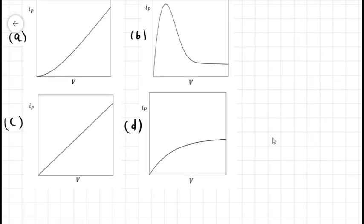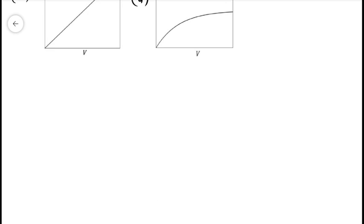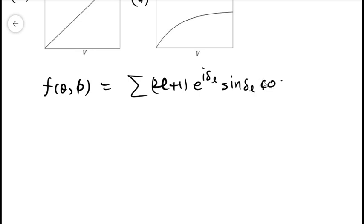So we can apply the scattering theory here. We know from the scattering theory the scattering amplitude is given by f(θ,φ) equals summation from l=0 to infinity of (2l+1) times e^(i*δ_l) times sin(δ_l) times P_l(cos θ). Here delta is the phase change in the l-th partial wave.